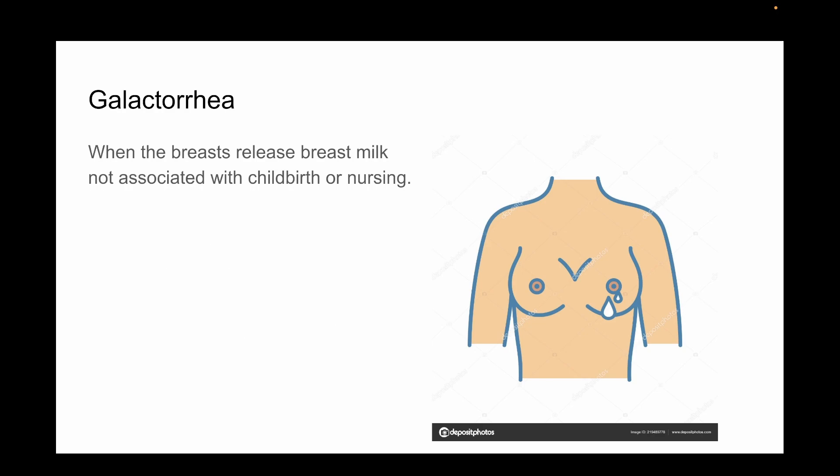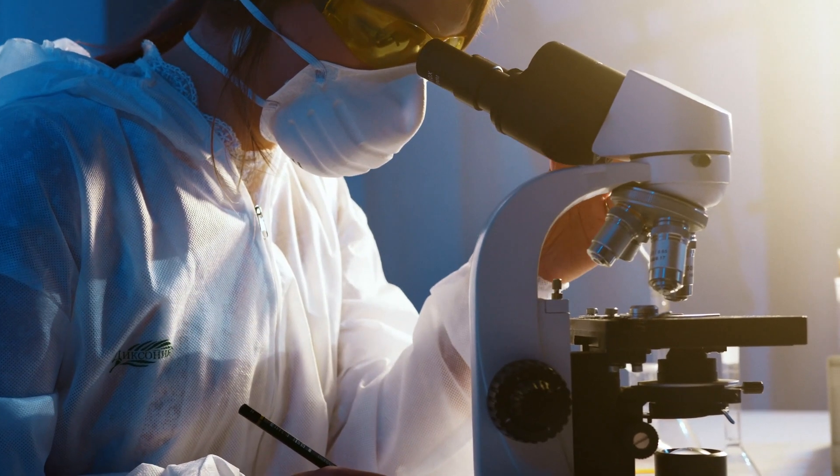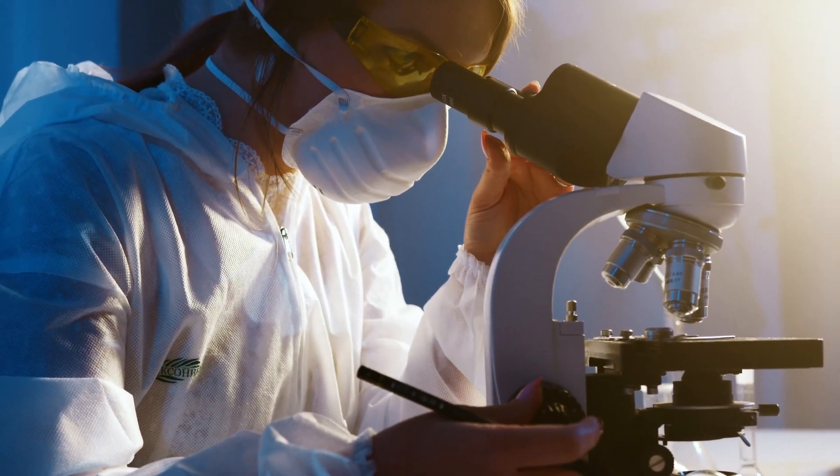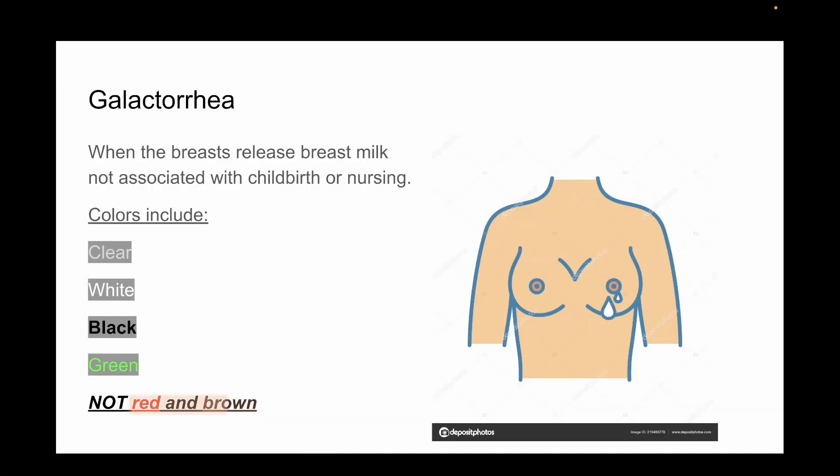I want to mention that breast milk can initially come in various colors, including clear, white, black, and green. A doctor may test the fluid for fat to ensure the liquid is milk and not blood or pus. For this reason, colors such as red or brown would be more concerning.